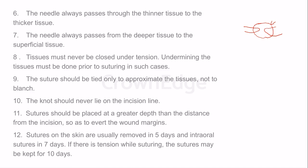Tissues must never be closed under tension. If there is not adequate space for the tissues to approximate, undermining must be done prior to suturing. Forcing a closure under tension will cause wound dehiscence later. The suture should be tied only to approximate the tissues, not to blanch them — over-tightening devoids the flap of blood supply and leads to necrosis.